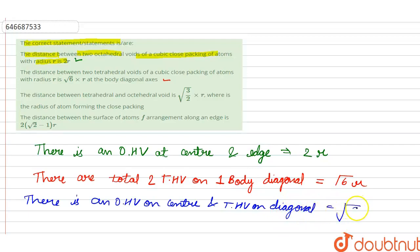Hence our third is also correct. Next, the distance between the surface of atoms of arrangement along an edge is 2 root 2 minus 1r. Now this is a fact which we need to learn and this is also correct. Hence all the four options are correct. Thank you and hope you understand.